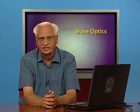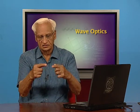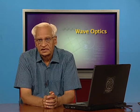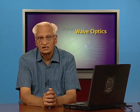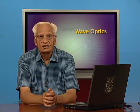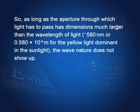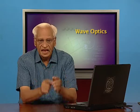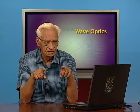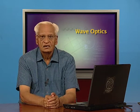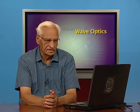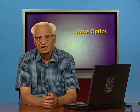As long as the aperture through which light has to pass is much larger than the wavelength of light — for example, for yellow light the wavelength is 580 nanometers or 0.580 microns — as long as the slit is much bigger than this, then the light can be treated as traveling in straight lines. We can treat light as rays.